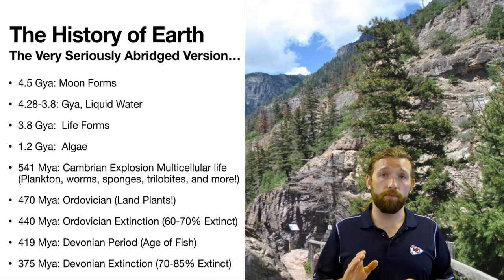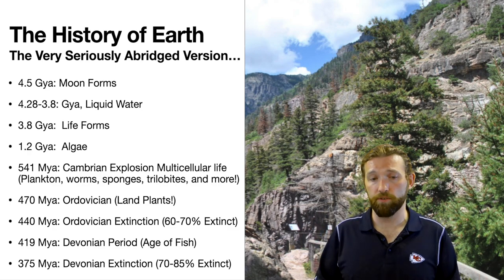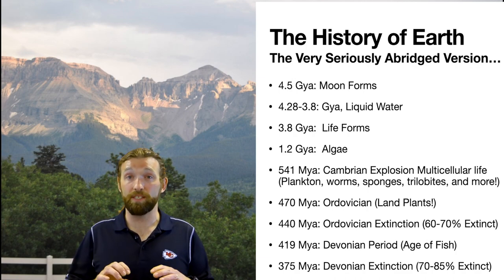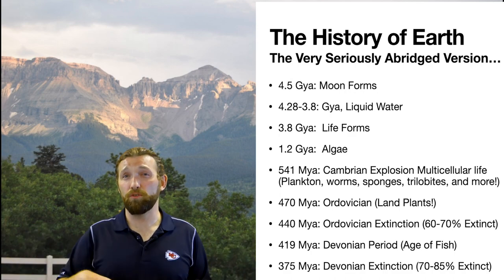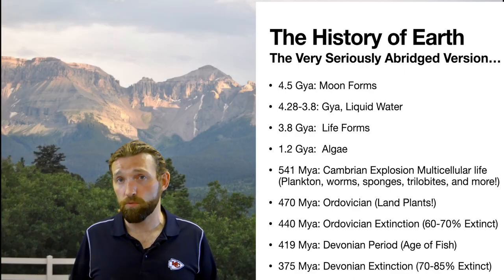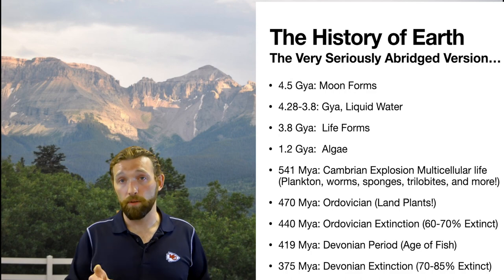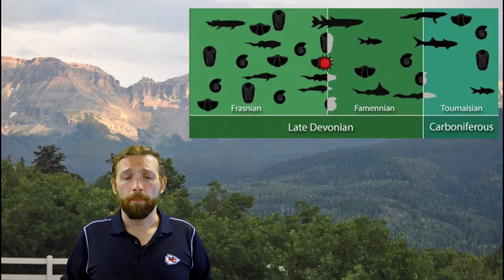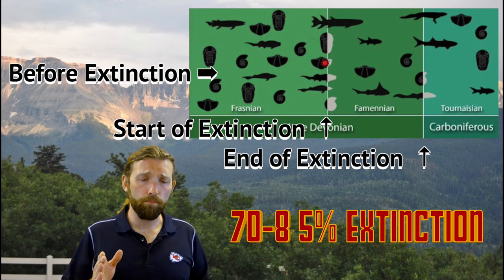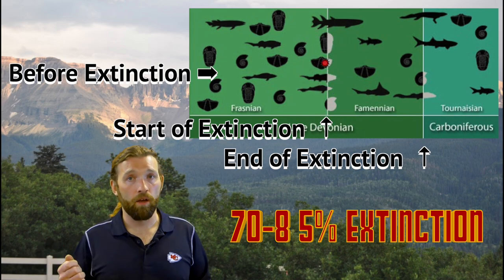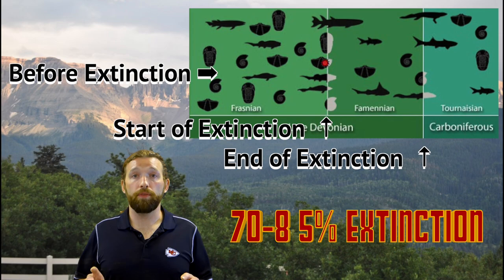Just like with the Ordovician, we mark the end of the Devonian period with another mass extinction — the second mass extinction in Earth's history. Very similarly, we think it probably had something to do with land plants taking off and unlocking more minerals, causing algal blooms. There are also situations where the continents were moving further north and south into polar regions, and the change in climate may also be responsible. At the end of the Devonian, between 70 and 85 percent of all species died off.